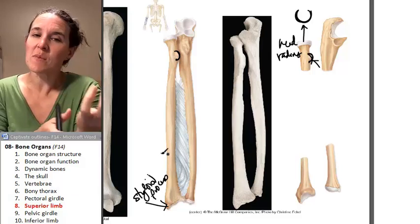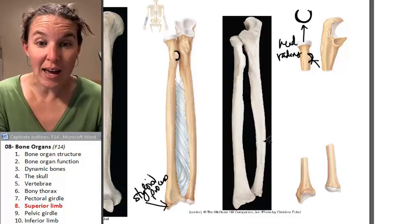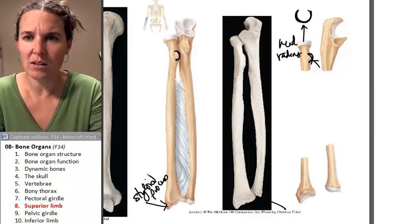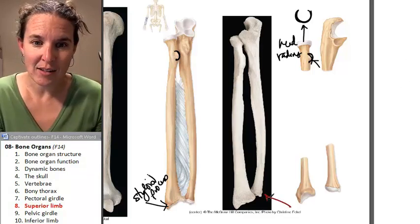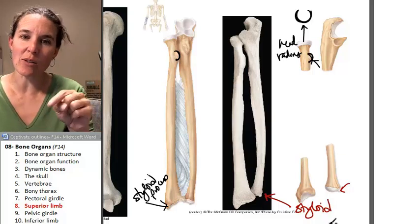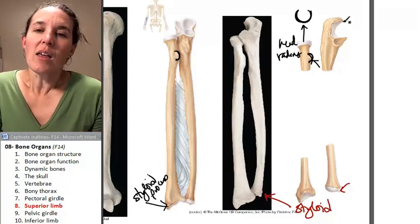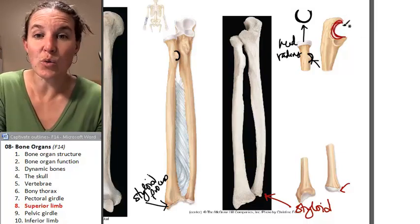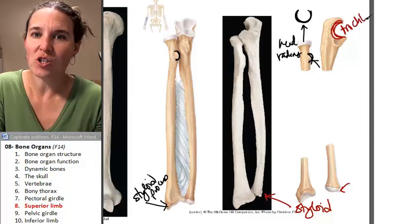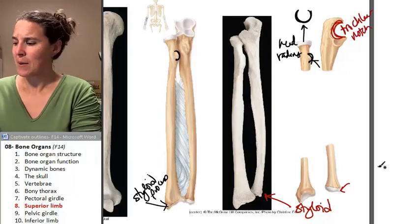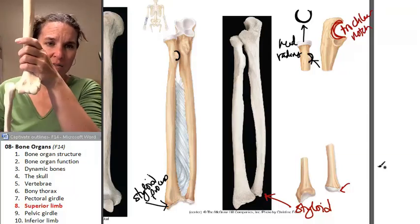The ulna, which is medial in anatomical position, also has a styloid process — the styloid process of the ulna. The ulna has a space called the trochlear notch, which attaches to the trochlea of the humerus. The trochlear notch and the trochlea — a match made in heaven.